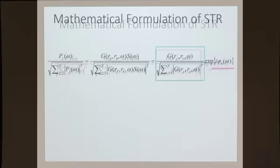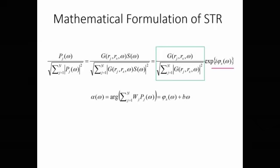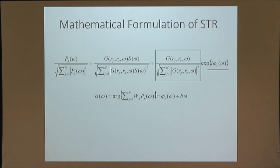What remains is an estimate of the transfer function plus an extra phase, which is the phase of the source signal. We can measure the left-hand side; from the right-hand side, if we can remove the source phase we will have an estimate of the transfer function. So we need a phase correction. The phase correction W is a weight function: we multiply W by the received signal P and sum over the number of receivers, then take the phase of this summation. If we choose the correct weight function, this phase will be the source phase plus a linear function in frequency.